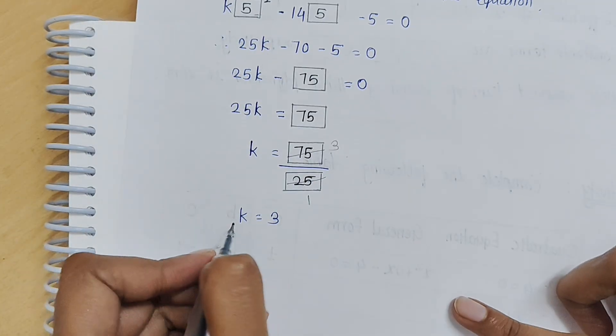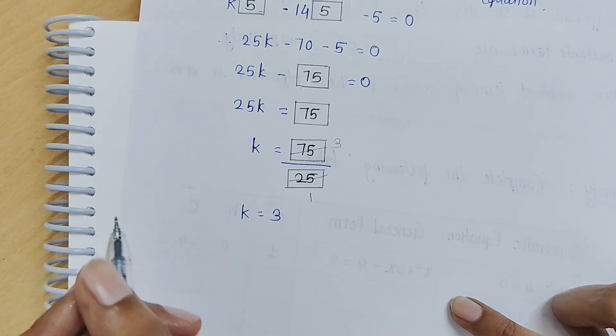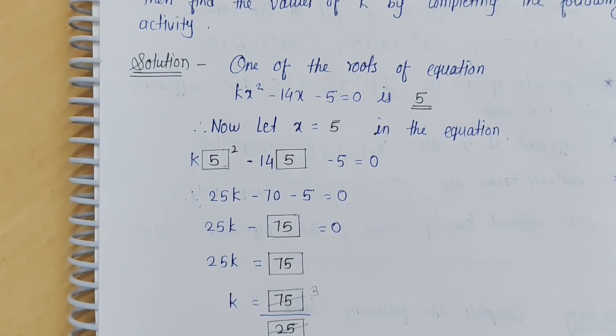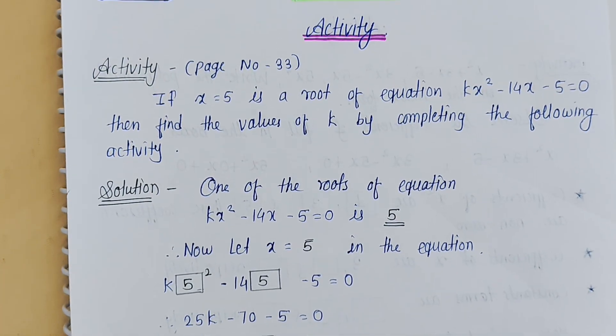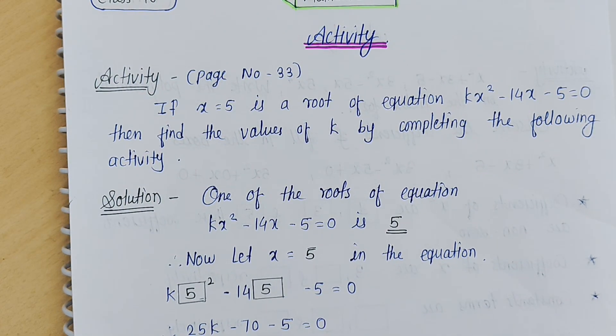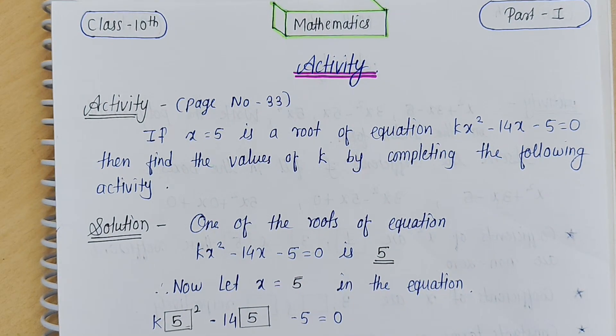What we have done is we substituted x equals 5 in the equation, and where there were empty spaces or empty blocks, we filled in the calculated values. I hope that you understand and find this helpful. If this video is helpful or good, please like, share, and subscribe to my YouTube channel. Thank you for watching.